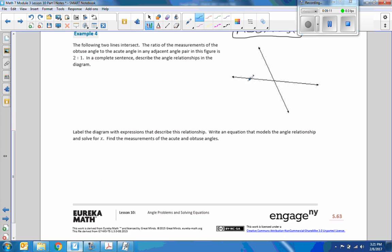Example 4. The following two lines intersect. The ratio of the measurement of the obtuse angle to the acute angle in any adjacent angle pair in this figure is 2 to 1. In a complete sentence, describe the angle relationships in the diagram. So we would say the measurement of an obtuse angle is twice the measurement of an acute angle in the diagram. So that's what that 2 to 1 ratio means, 2 to 1. The obtuse to acute is 2 to 1, and obtuse is an angle that is greater than 90 degrees, and acute angle is an angle that is less than 90 degrees.